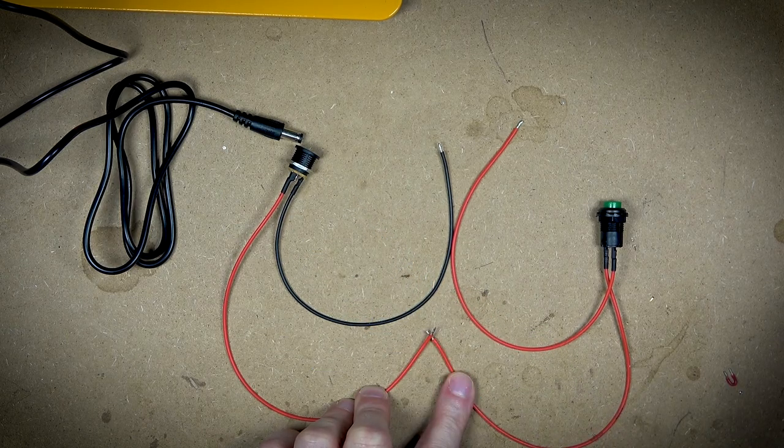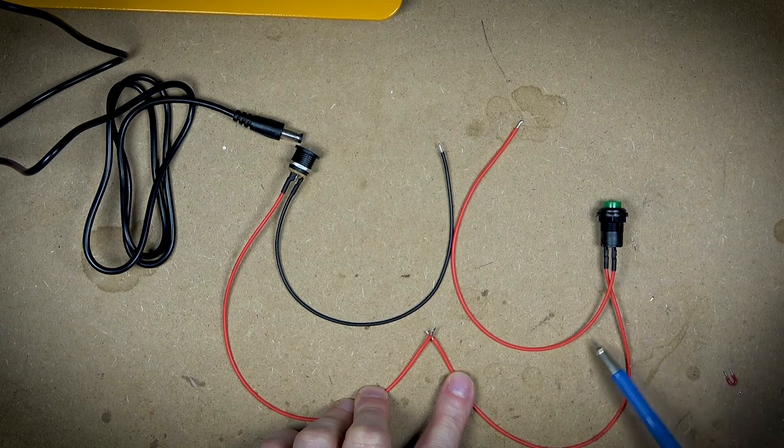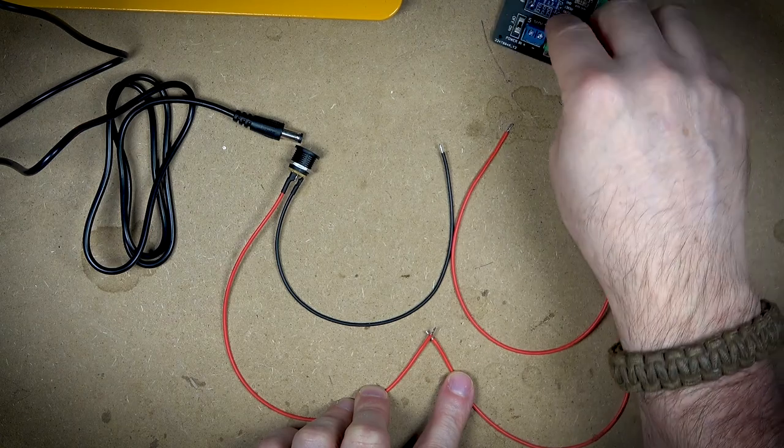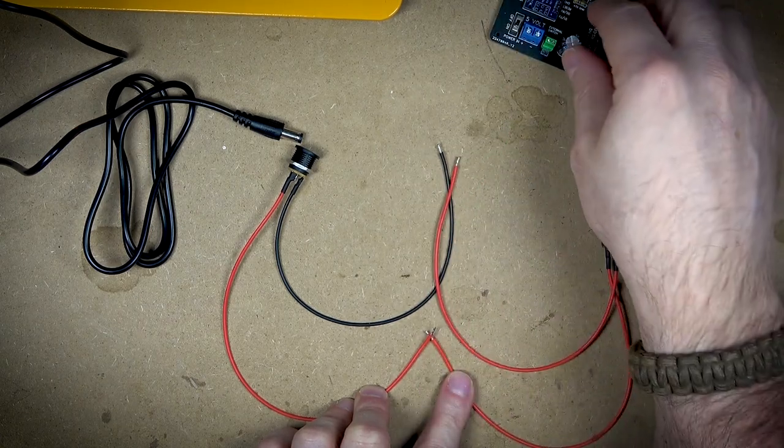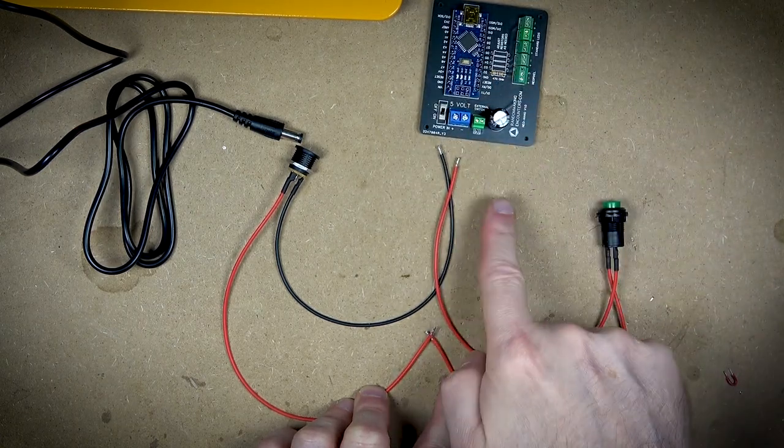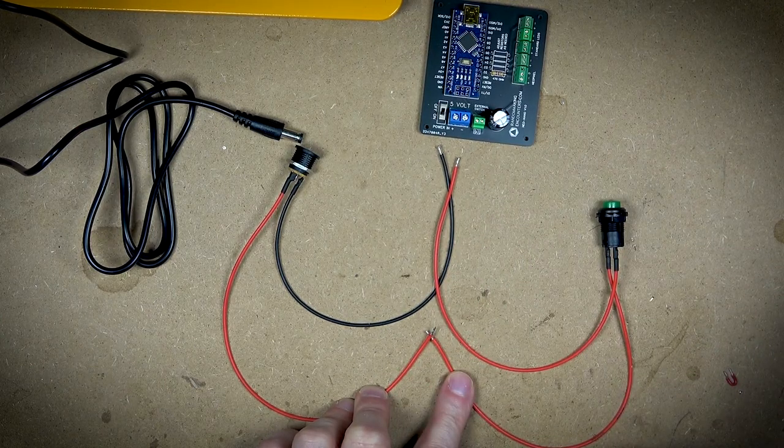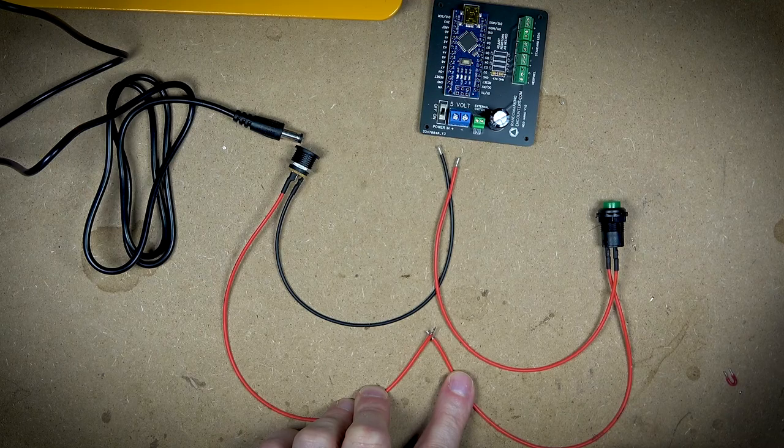I would connect one of the positives from the switch into the positive from the jack, and then that positive would go to the positive of the thing that I'm powering. This is really just a more traditional setup for a switch to the power plug.